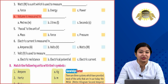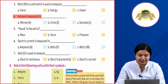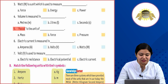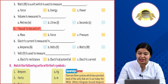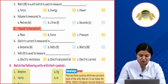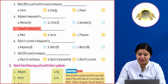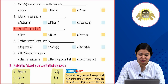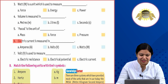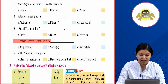Fifth: Pascal is the unit of — option A: mass, option B: force, option C: pressure. Pascal jo wo kiski unit hai — the answer is option C, pressure. It is the unit of pressure.